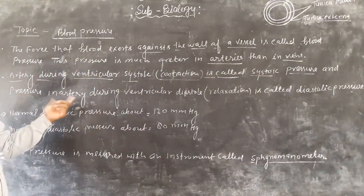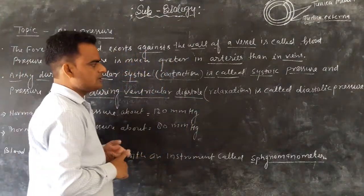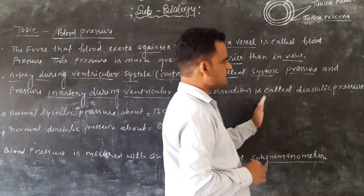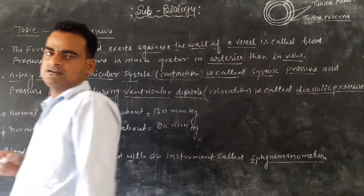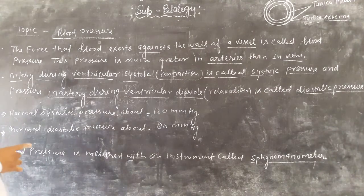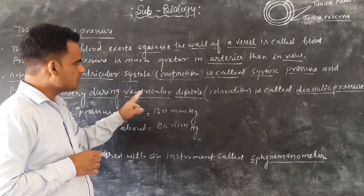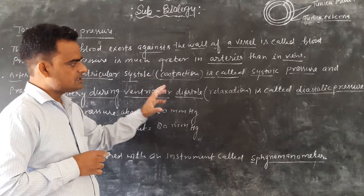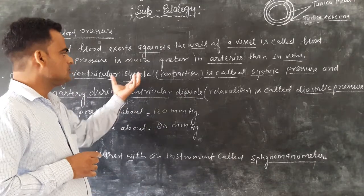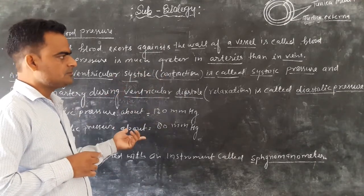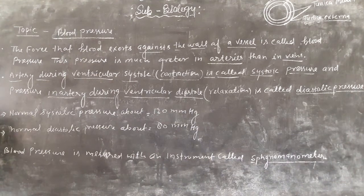The pressure in the artery during ventricular diastole, which is the relaxation phase, is called diastolic pressure. So the systolic pressure is the contraction and the ventricular diastole is the relaxation. The heart has two processes: contraction and relaxation.